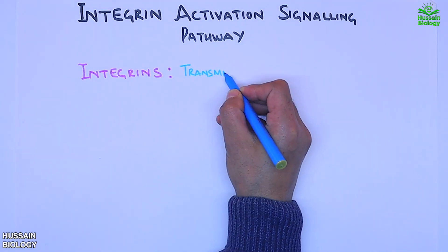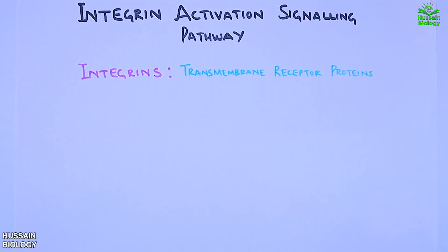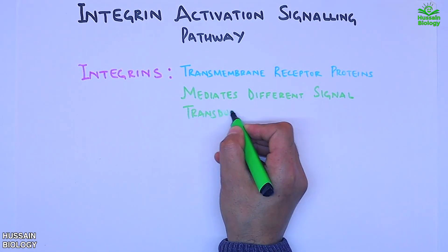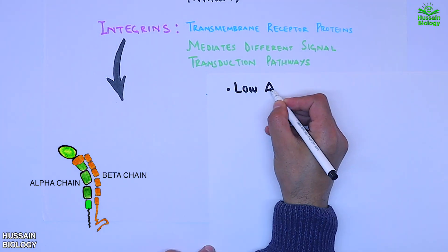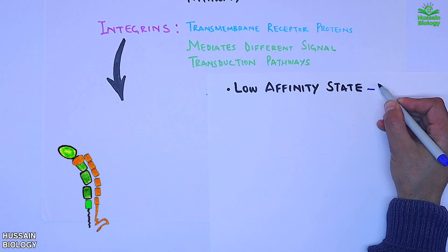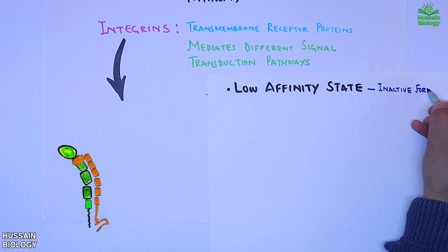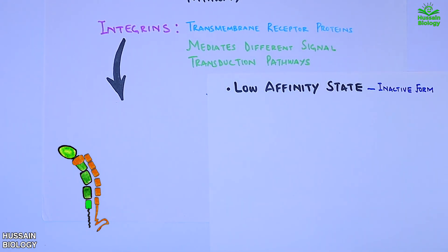We know integrins are transmembrane receptor proteins that mediate different signal transduction pathways. Here in this diagram we can see the structure of integrin molecule. It has two chains, one alpha and one beta chain. This conformation of integrin molecule, the bent conformation, is in low affinity state, meaning it's the inactive form of integrin molecule.